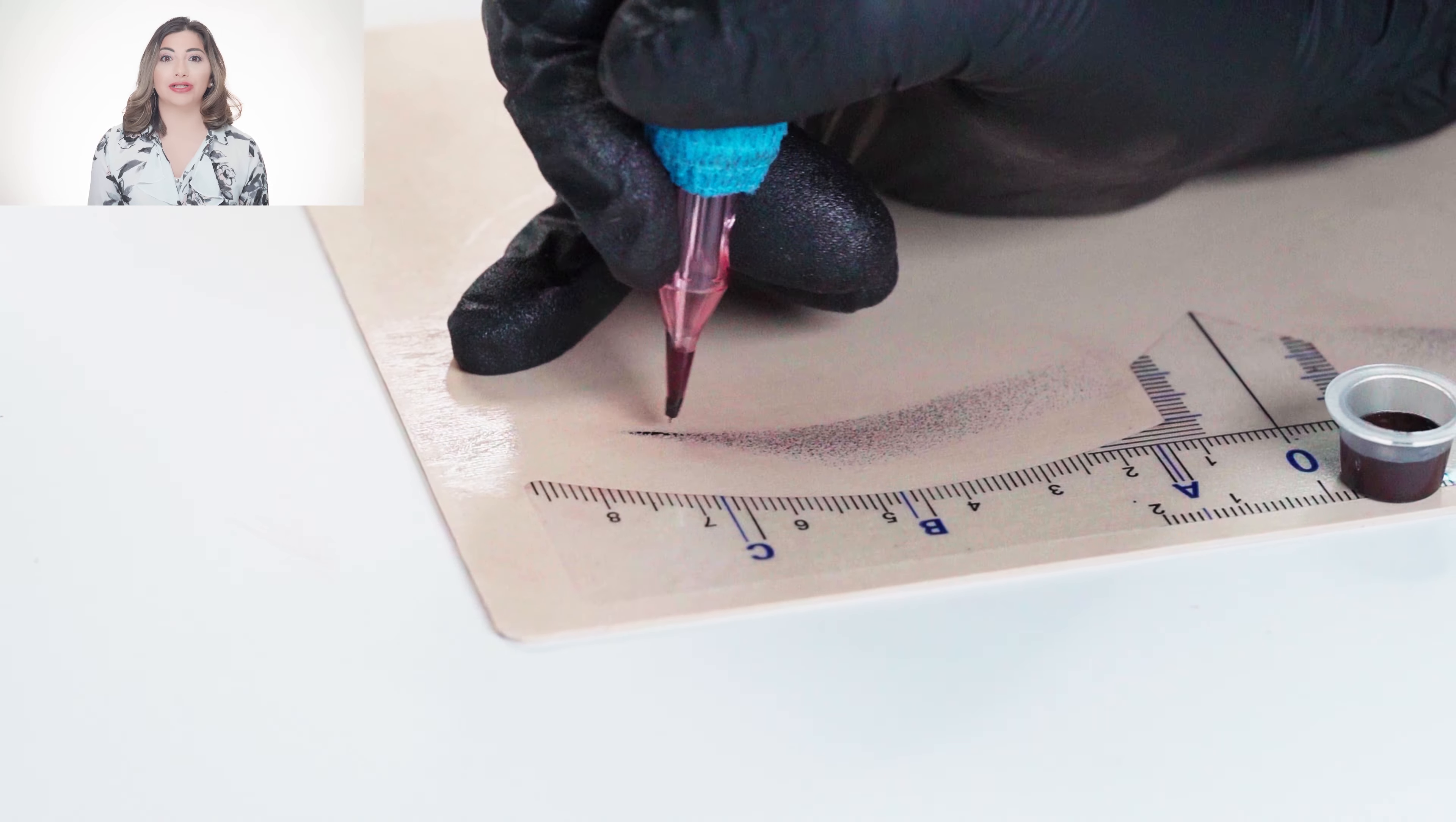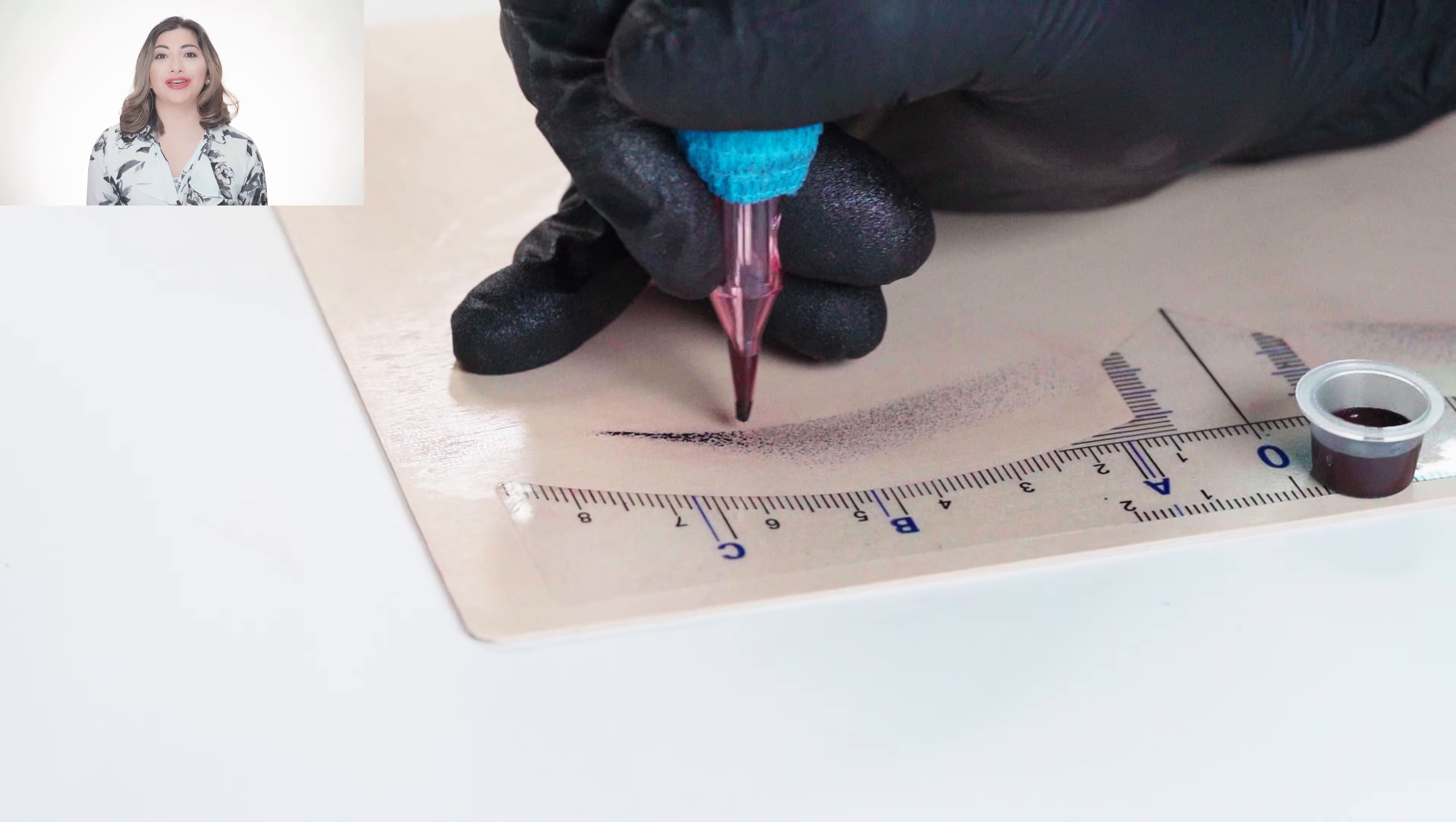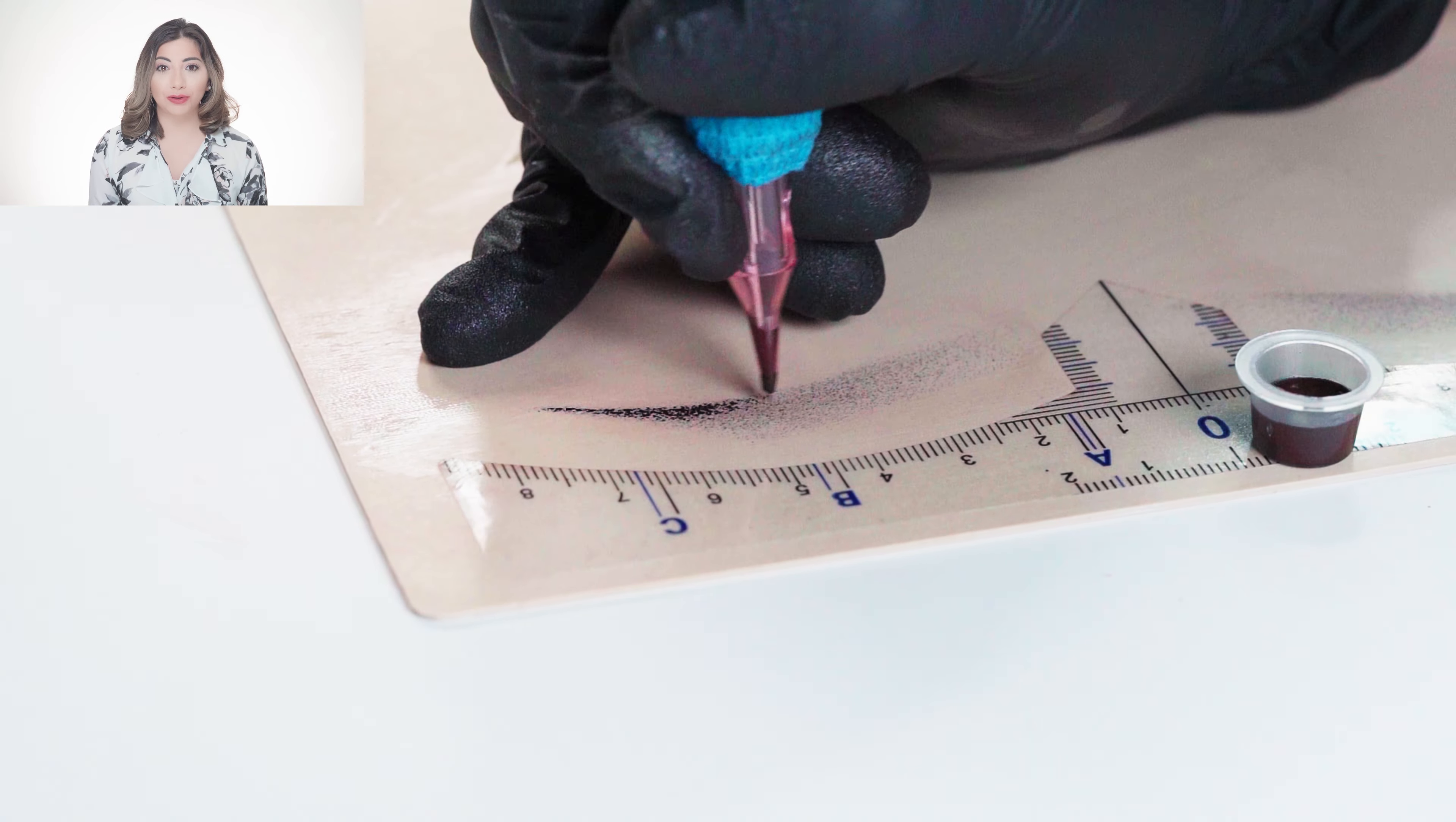For the third pass, we work in the darkest segment or the bottom section of the eyebrow. And we only touch the middle segment. For the third pass, I work horizontally and vertically. I don't touch any of the edges, including the front bulbs of the eyebrows.